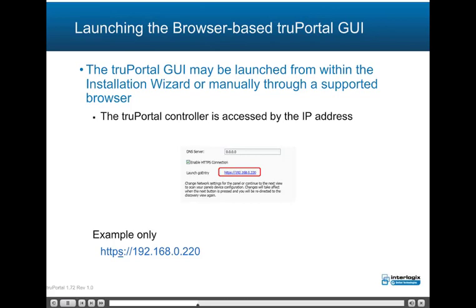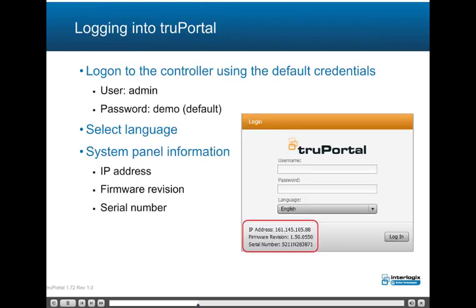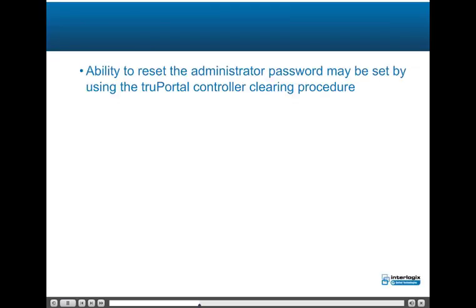The TruePortal controller is accessed by the IP address configured for the system controller. The login dialog displays the system panel information including IP address, firmware revision, and serial number. The language may be selected based on what languages have been installed; the system defaults to English. Log into the controller using the first-time default credentials: user is 'admin', password is 'demo'. The administrator password may be reset to the default if forgotten by using the controller clearing procedure; contact support for the proper procedure.